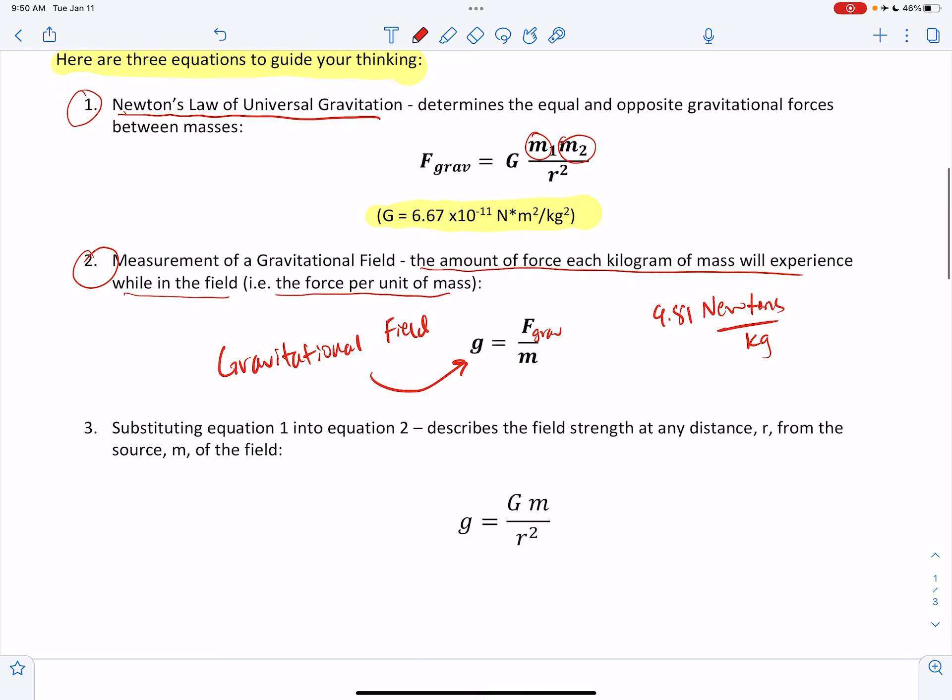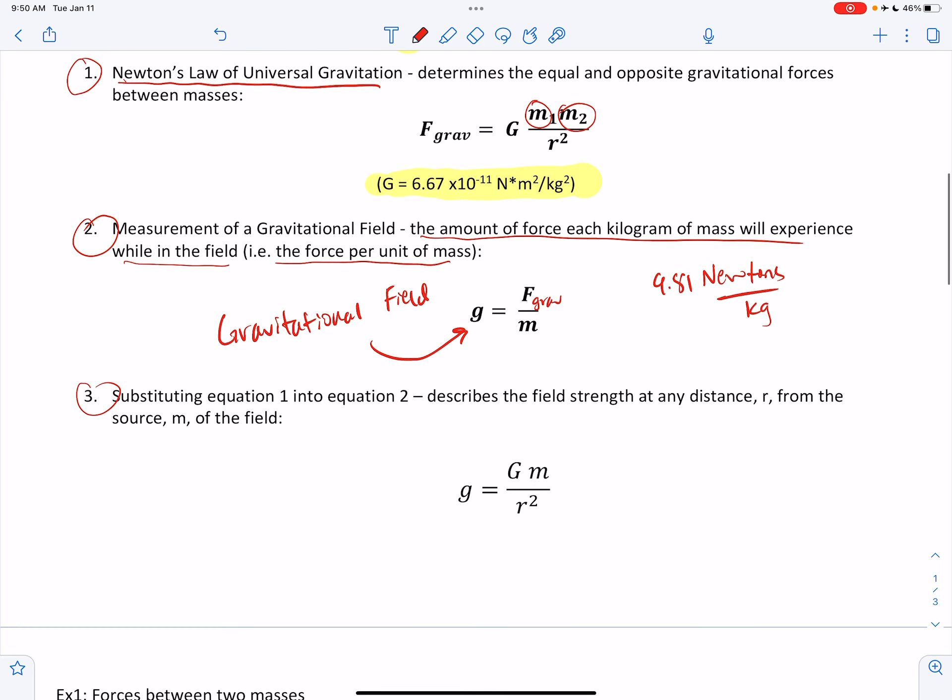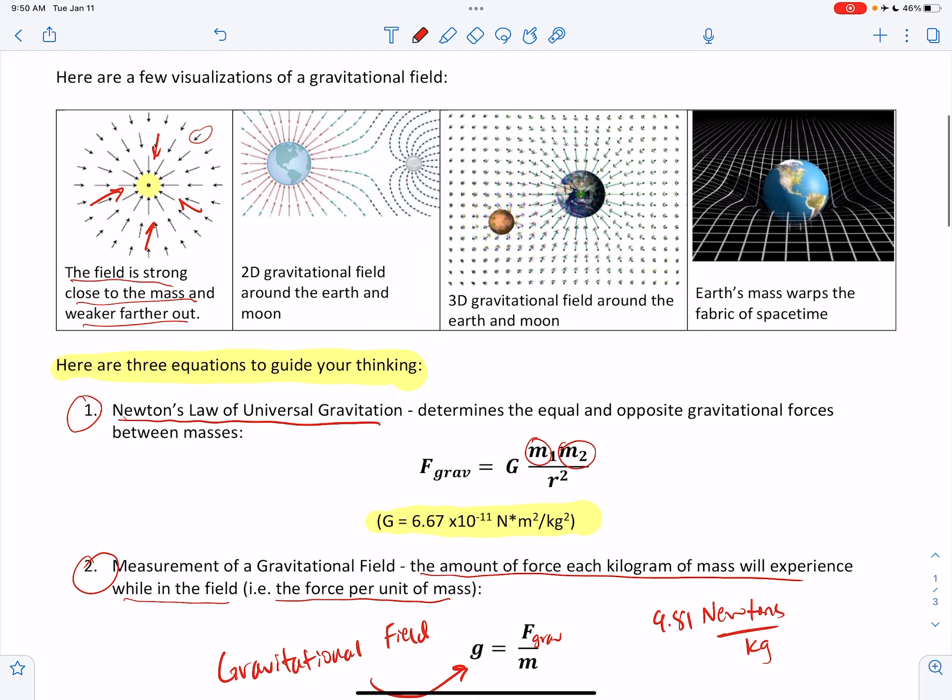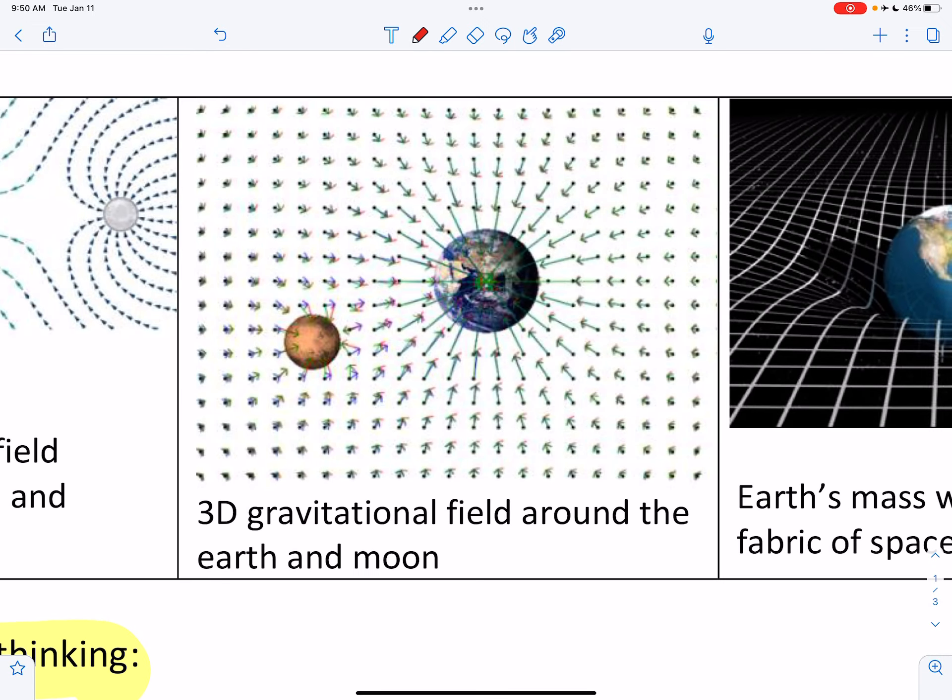And then if you substitute equation 1 into equation 2, you can describe the field strength at any distance r from the source of the field. So if we're up here in this model, and let's say we're floating out in space like right here, we could actually figure out what the strength of the gravitational field is at that red dot, or super close to the Earth, or halfway between the two objects.